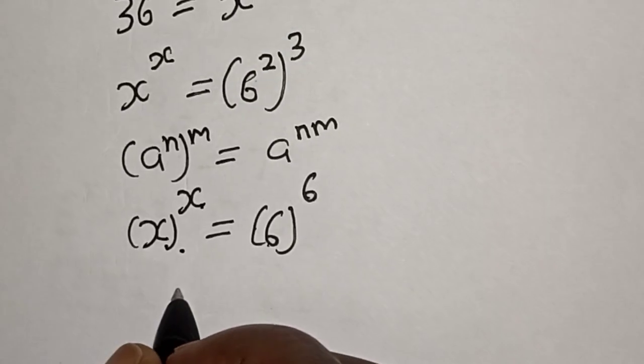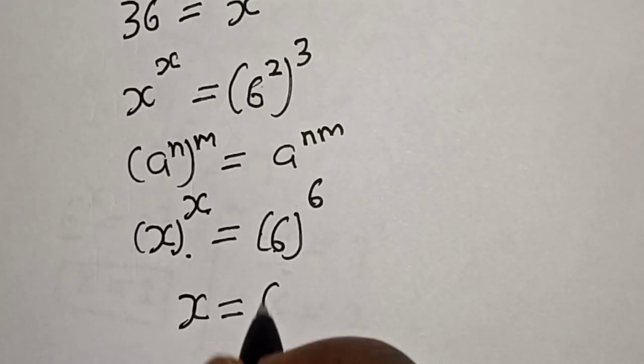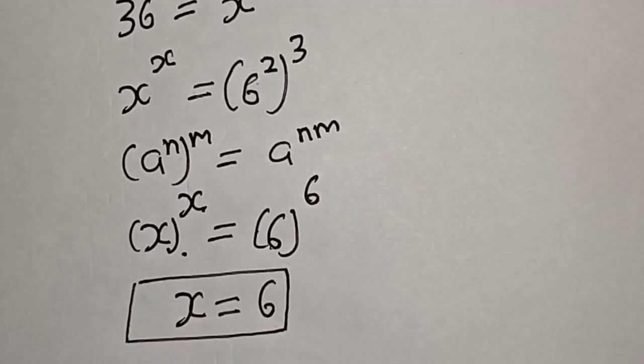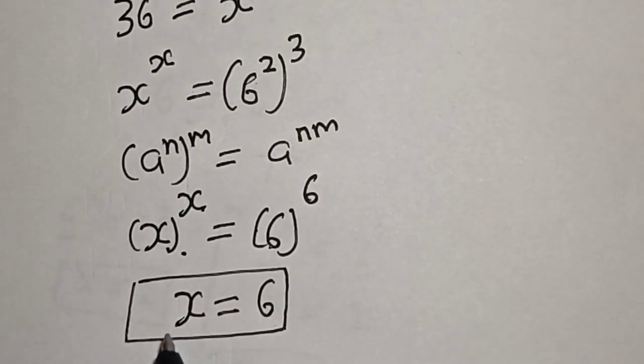If you compare this value where this x is equal to this and the exponents x is equal to this, therefore x is equal to 6. That is our final answer. If you enjoyed the class, please don't forget to like, share, comment and subscribe. Thank you.